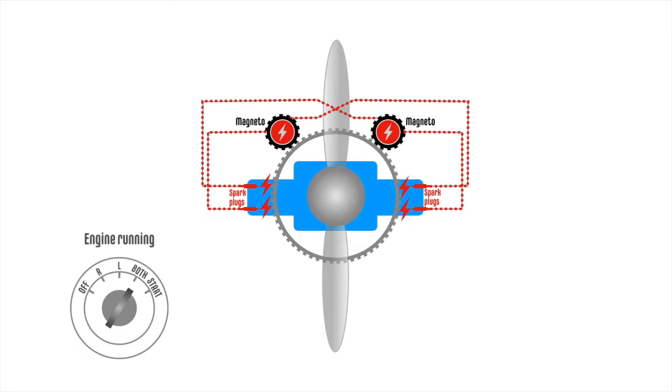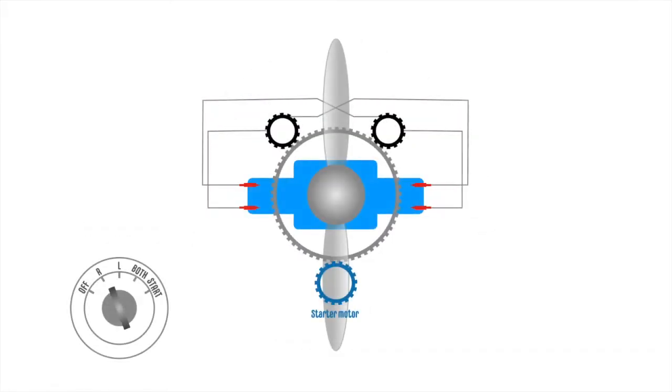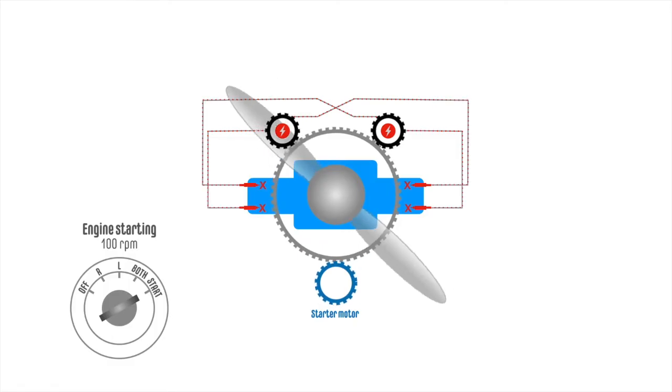Since the magnetos are mechanically driven by the engine, they need to be rotated fast enough to generate the current that is necessary for the spark plugs to work properly. At startup however, the electric motor drives the engine slowly, so the magnetos are also slow and generate insufficient current for the spark plugs.